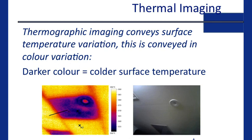For those that haven't seen thermal imaging before, it conveys surface temperature in colour variations. The colder the surface, the darker the colour; the warmer the surface, the more orange or red the colour. Here we have a thermal image and a digital image of a downlight — and what the thermal image is picking up is that the electrician removed the insulation. Very typical of what we're finding. We're still building to the old halogen days where you had to pull the batts away, but we now have better technology where you can insulate up to or over the downlight.